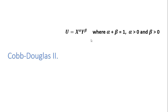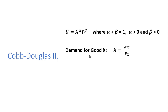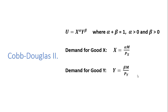Here's another example of Cobb-Douglas. This time we'll let the exponents sum to one — for example, 0.4 for alpha and 0.6 for beta. So long as the exponents sum to one, our demand for good x will look like this, and our demand for good y will look like this. p subscript x is the price per unit of good x, p subscript y is the per unit price of good y, and m is income.